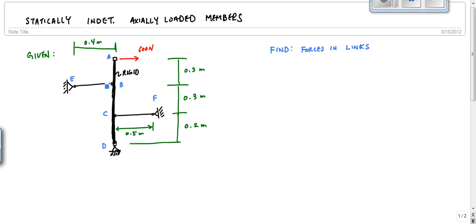I have links BE and CF kind of holding it up. And then this is a pin support down here. A pin down there. And I want to find the forces in links BE and CF. I have 600 newtons applied horizontally at A.